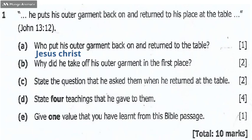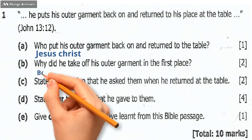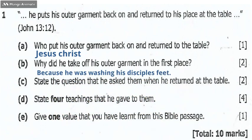Question 1b: Why did he take off his outer garment in the first place? The reason he took off his garment can be found at the beginning of the passage, where it reads 'when he had finished washing their feet.' He took off the outer garment because he was washing his disciples' feet — that is the reason why he took off his garment.